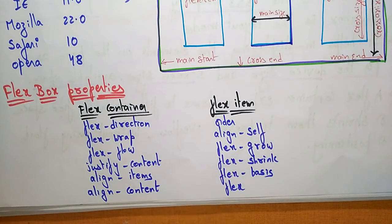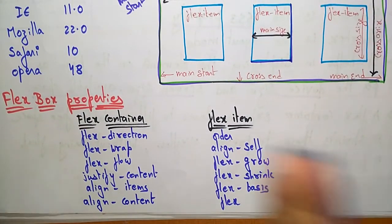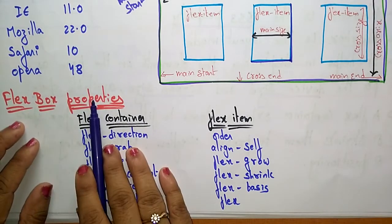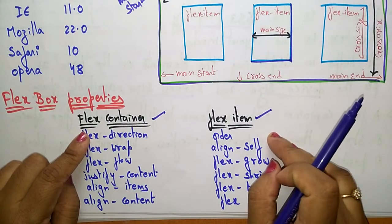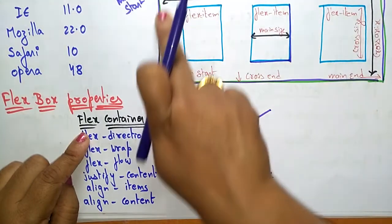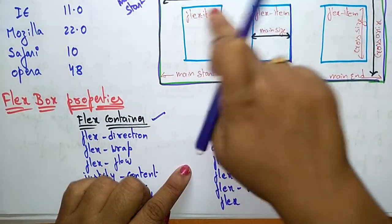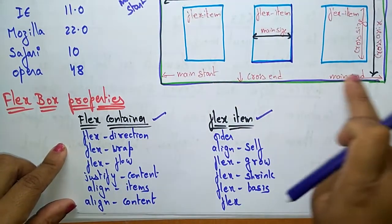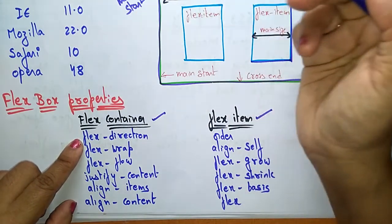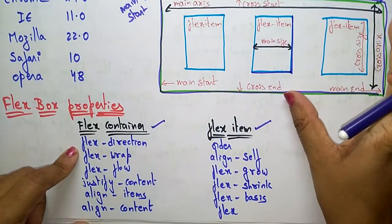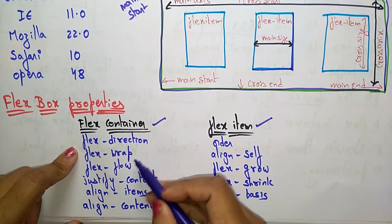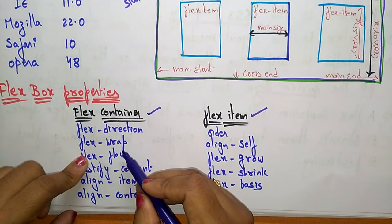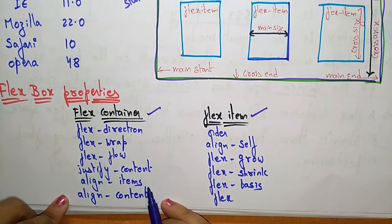These are the different properties used in flexbox to create a flex container. The flex box properties are divided into two groups: flex container properties and flex item properties. The flex container properties are: flex-direction, flex-wrap, flex-flow, justify-content, align-items, and align-content.